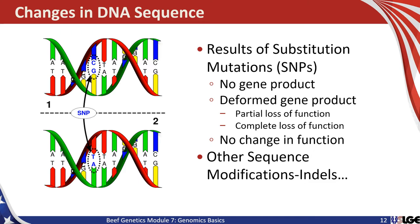Here's another example of a SNP, or a change in the DNA sequence. The results of mutations or substitutions of SNPs can be that, depending on where the mutation happens, there may be production of no gene product — completely silencing the gene product — or a deformed gene product with a partial or complete loss of function depending on the peptide substitution. In some cases, no peptide change results, or a peptide change that doesn't functionally change the shape of the protein results in no change in function. There are other sequence modifications that exist in mammals, including what are called indels — insertions or deletions — which are big chunks of DNA inserted rather than a single nucleotide base change.